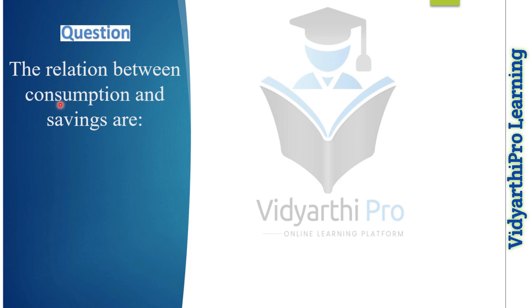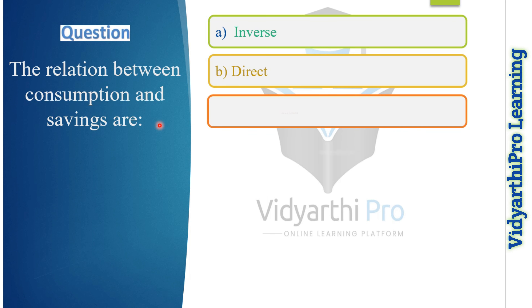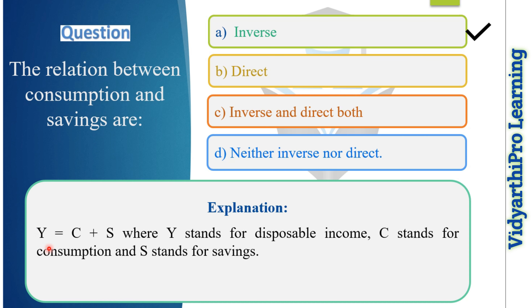Our next question: the relation between consumption and savings is what? Option one: inverse relationship. Option two: direct relationship. Option three: inverse and direct both. Option four: neither inverse nor direct. The correct answer is option A, inverse relationship. Y = C + S, where Y stands for disposable income, C stands for consumption, and S stands for savings.